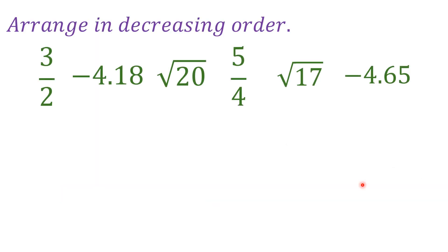For another example, we have a new set of real numbers to arrange in decreasing order, or descending order. We have three-halves, a rational number, an integer, a rational number in decimal form, an irrational number, a rational number, another irrational number, and a rational number. Again, we'll follow the same procedure and change everything into decimal so it's easier to compare, and remember we're arranging from biggest to smallest.